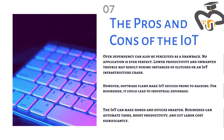The pros and cons of IoT: over-dependency can be perceived as a drawback, as no application is ever perfect. Lower productivity and unwanted trouble may result from glitches or infrastructure crashes. Software flaws make IoT devices prone to hacking, and for businesses it could lead to industrial espionage. On the positive side, IoT can make homes and offices smarter — businesses can automate tasks, boost productivity, and cut labor costs significantly.